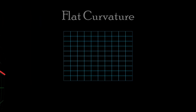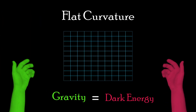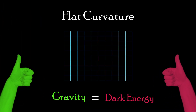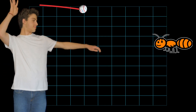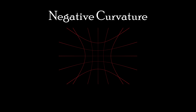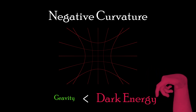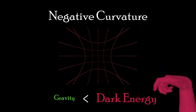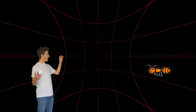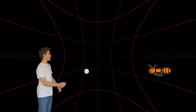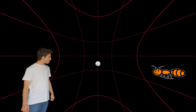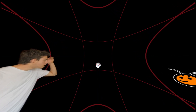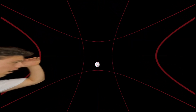Flat curvature is if the universe has the perfect amount of mass to match the universe's expansion. You could throw a ball to someone on the other side of the universe, but not to yourself. Negative curvature is when the universe has too little mass to combat the universe's expansion. At some point, you might not even be able to throw a ball to someone on the other side, because the space between the ball and them would be expanding too fast.